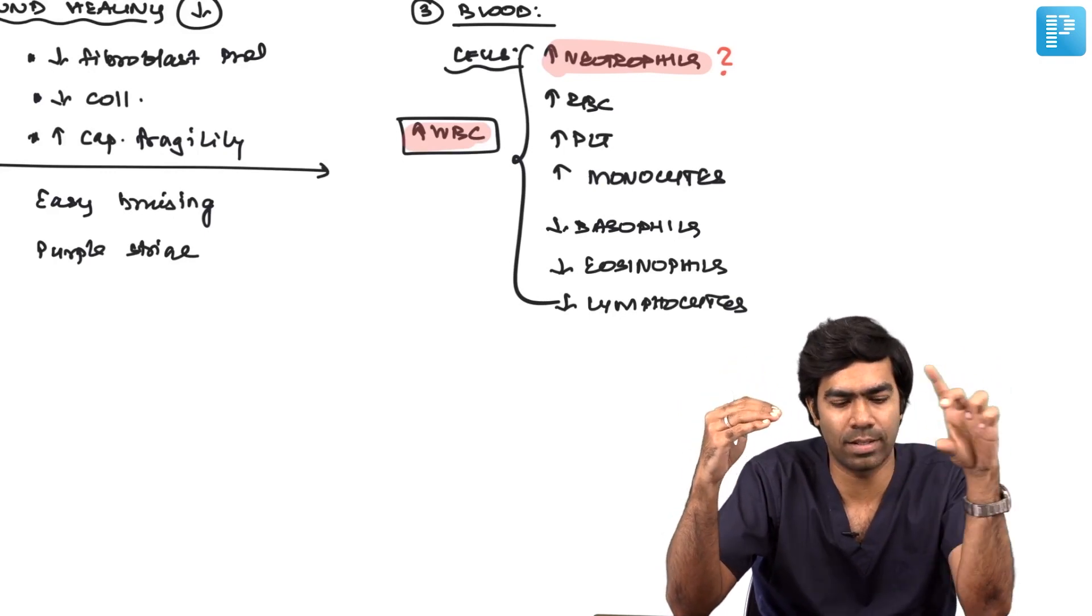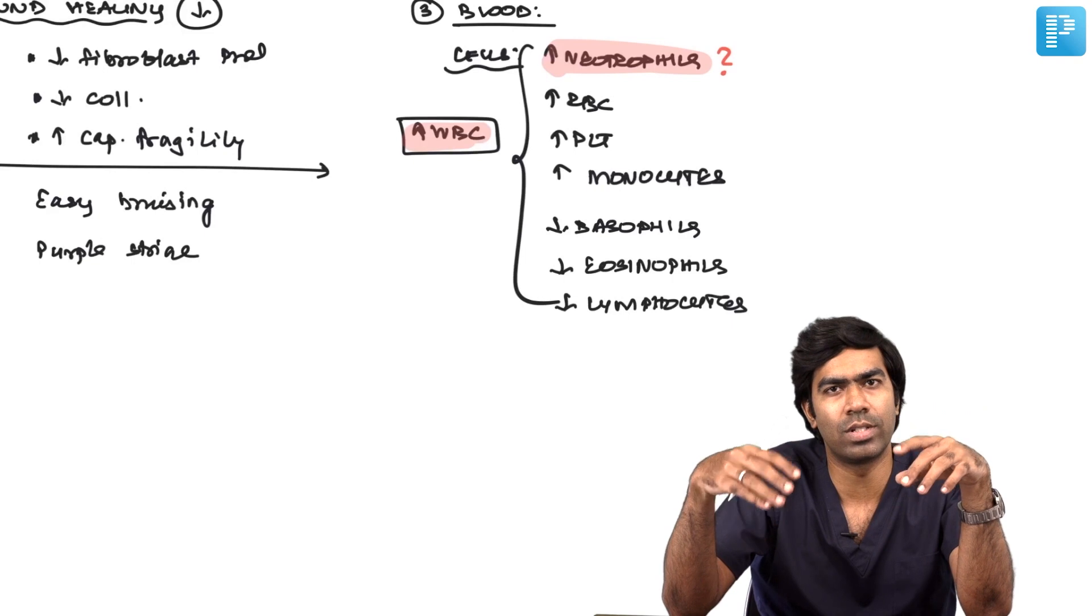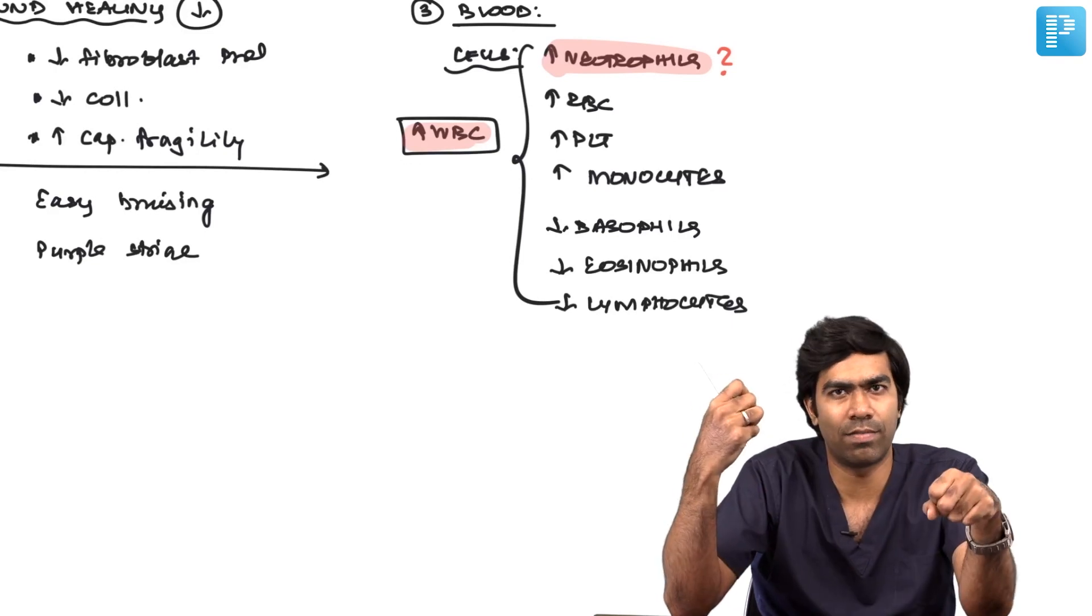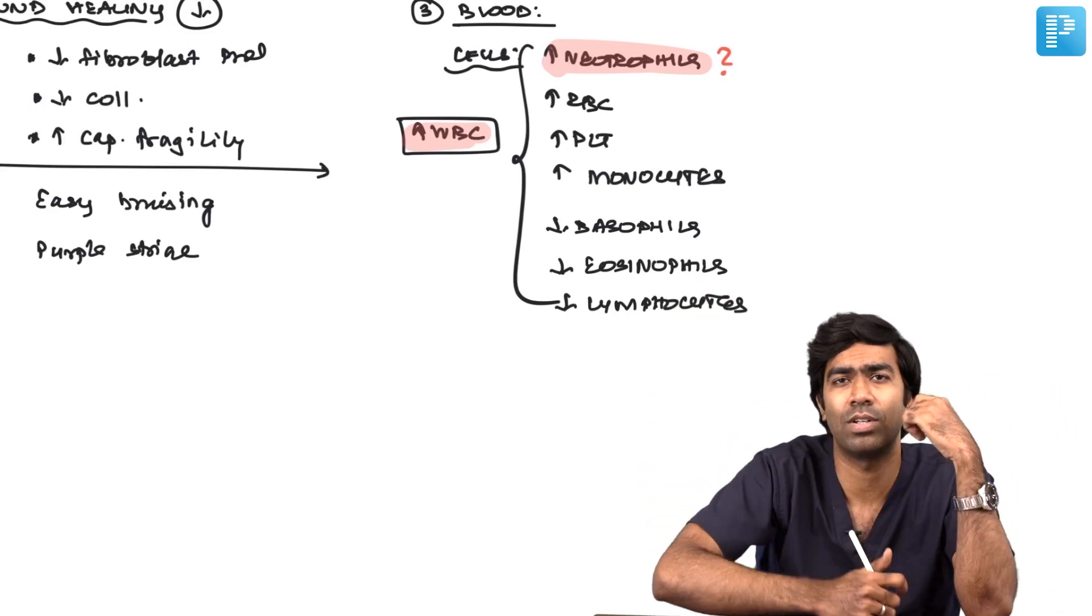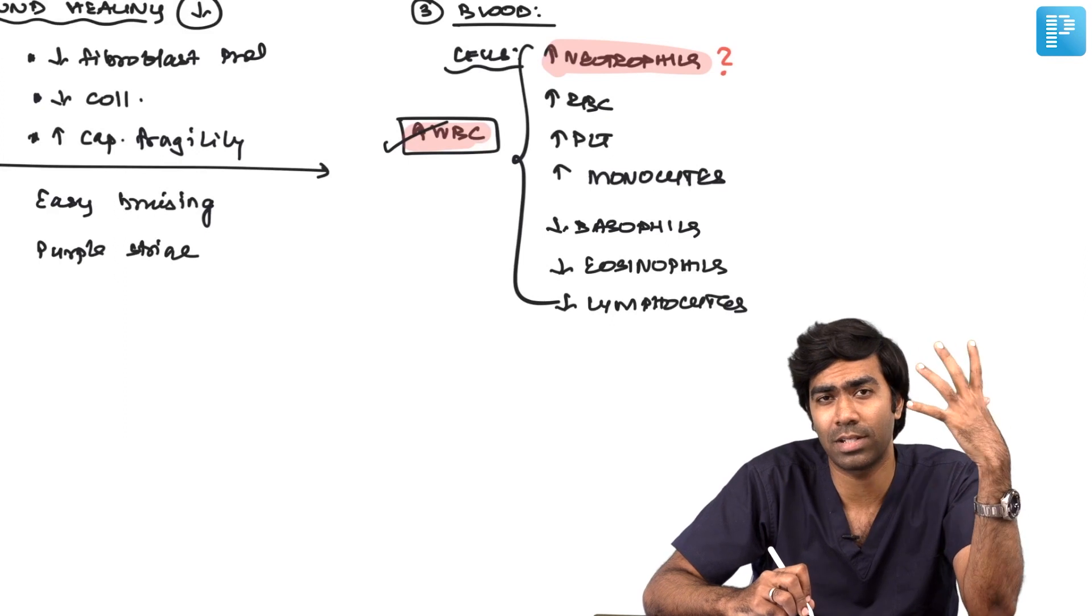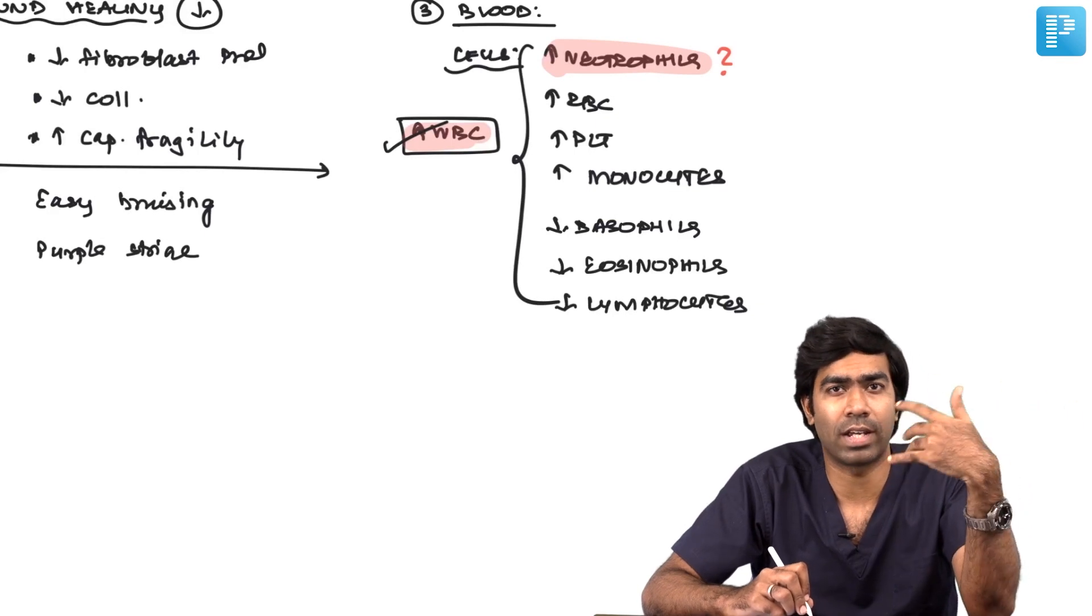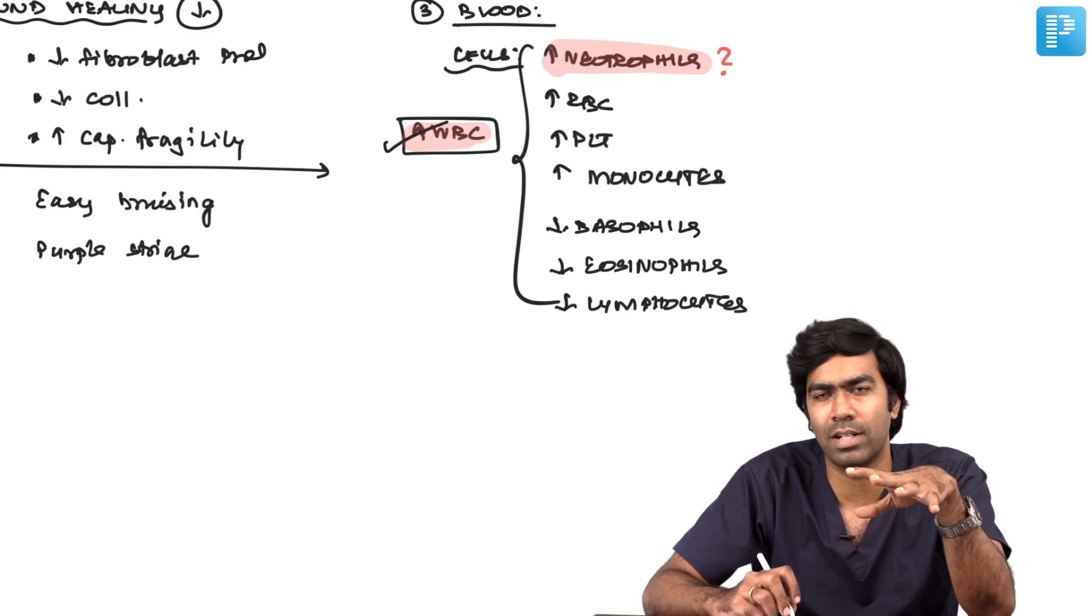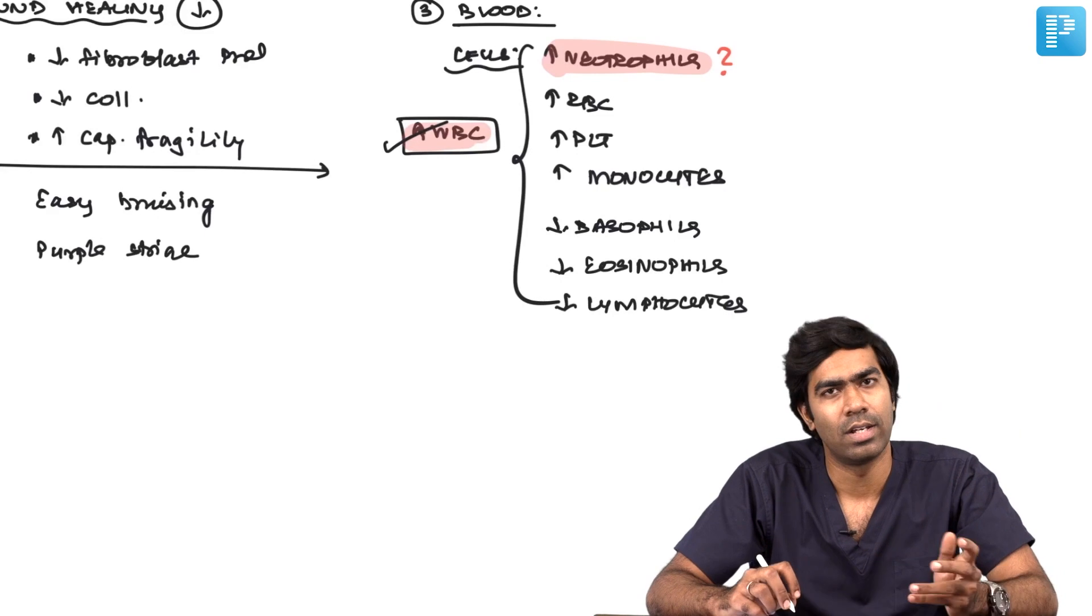Fifty percent will be in the marginated pool and 50% in the circulating pool. Steroids demarginate neutrophils from the marginating pool to enter the circulating pool. When you take blood, it appears as more neutrophils, but it's not excessive production - just marginated pool coming into circulating pool. Even though there is high WBC after steroids, paradoxically the patient has low immunity because neutrophils have to marginate to produce inflammatory response. If they cannot marginate, they cannot fight infection - that's one reason they are immunosuppressive.